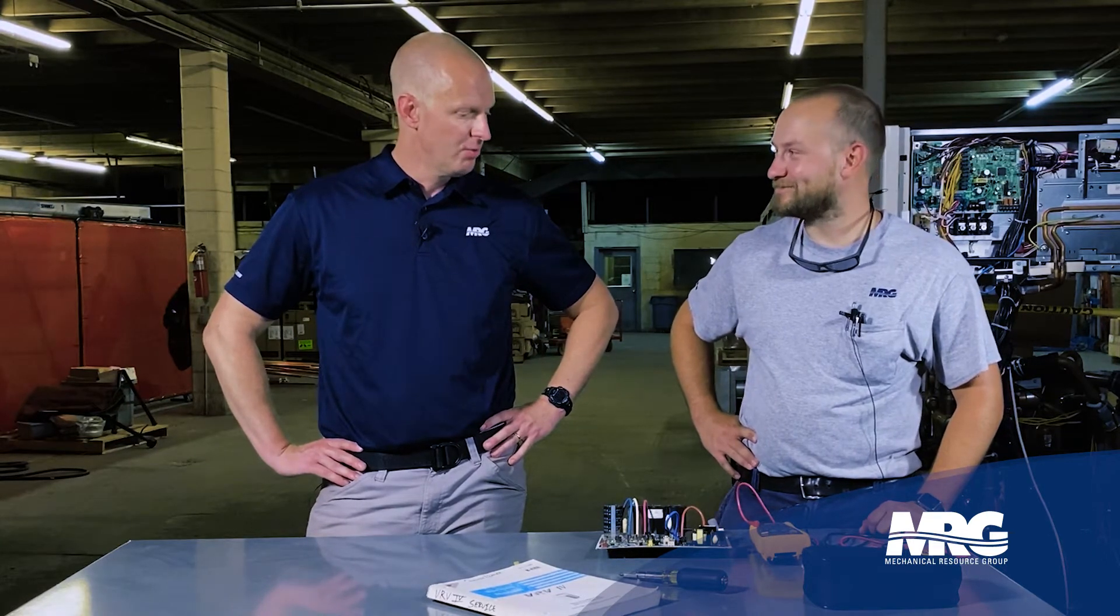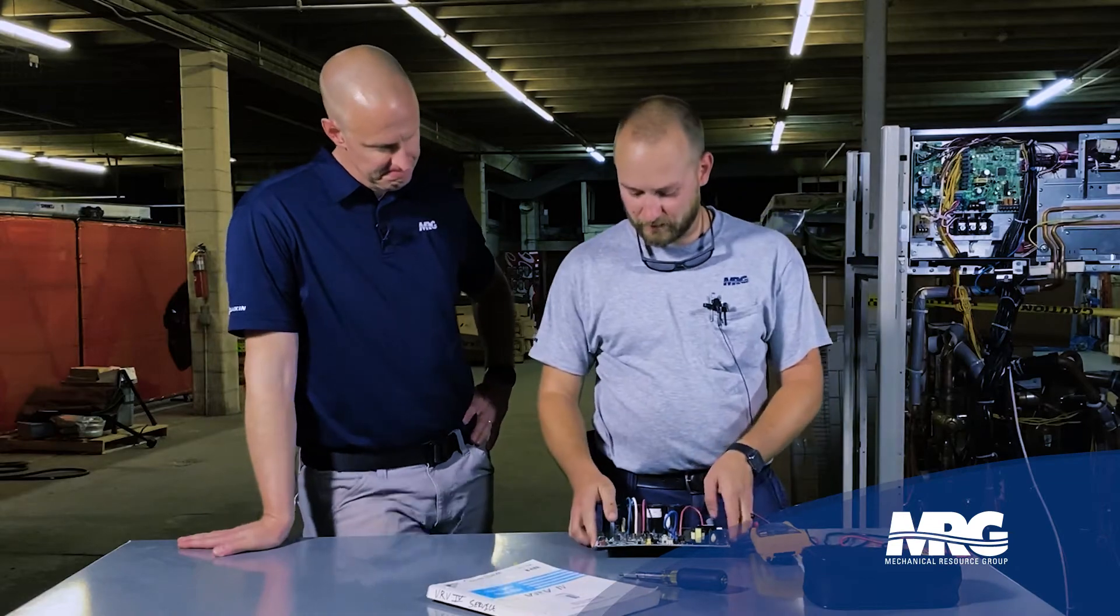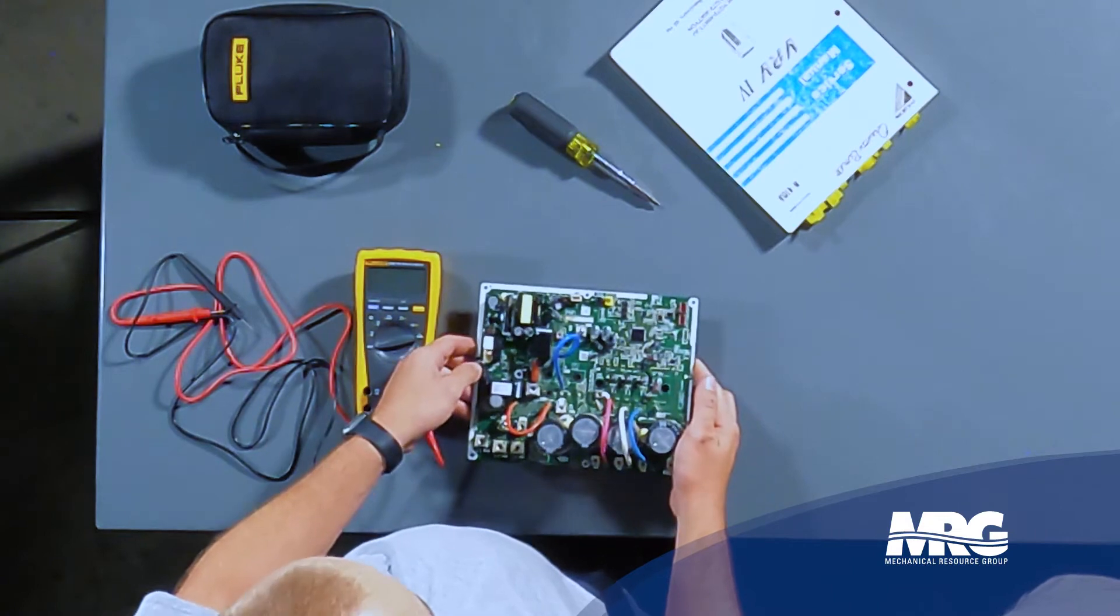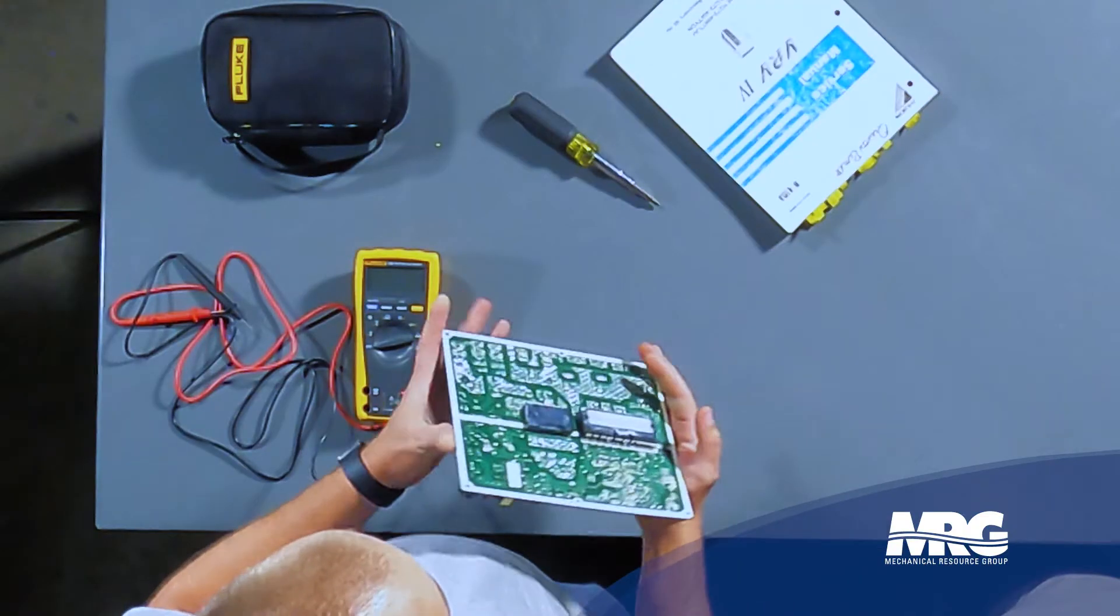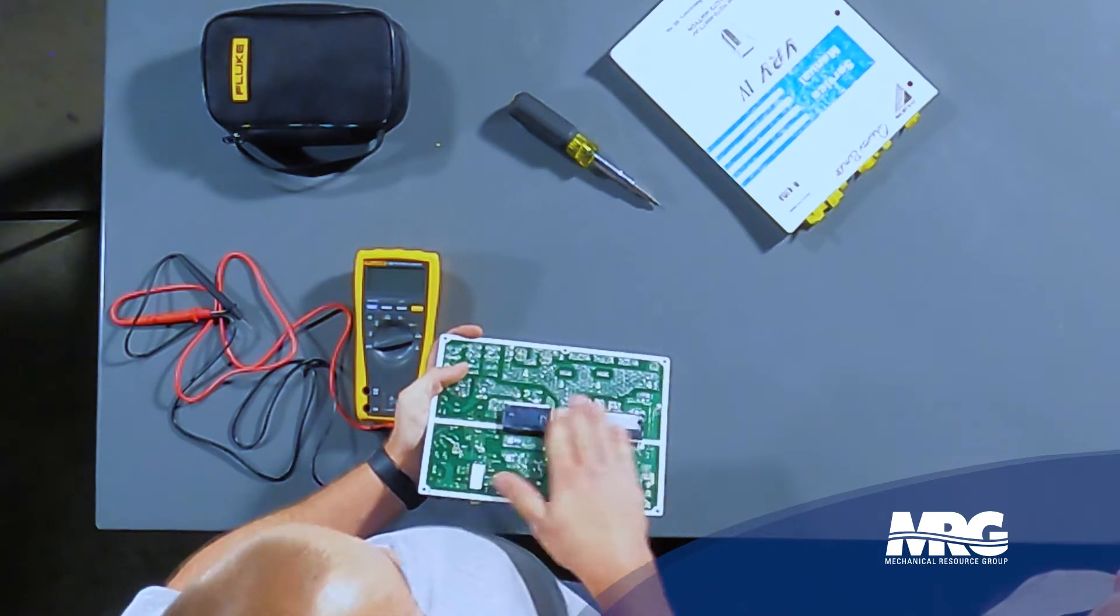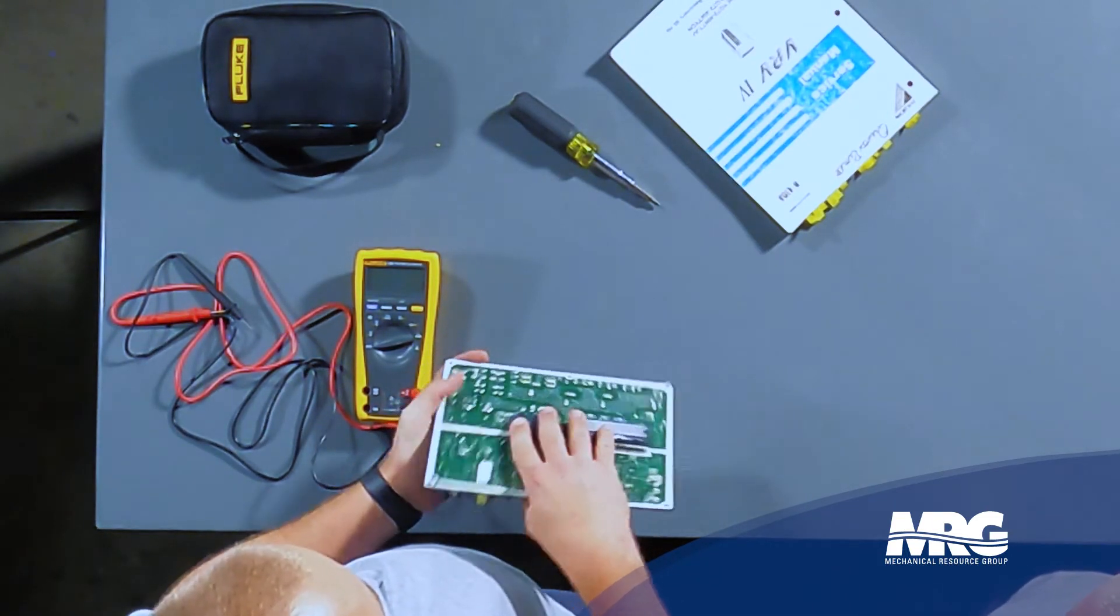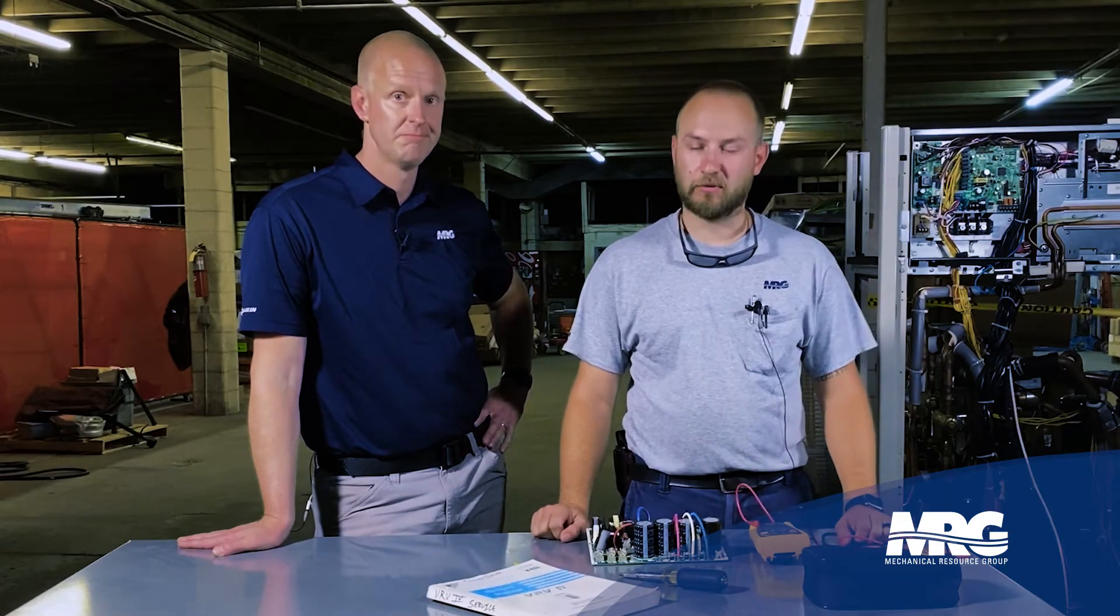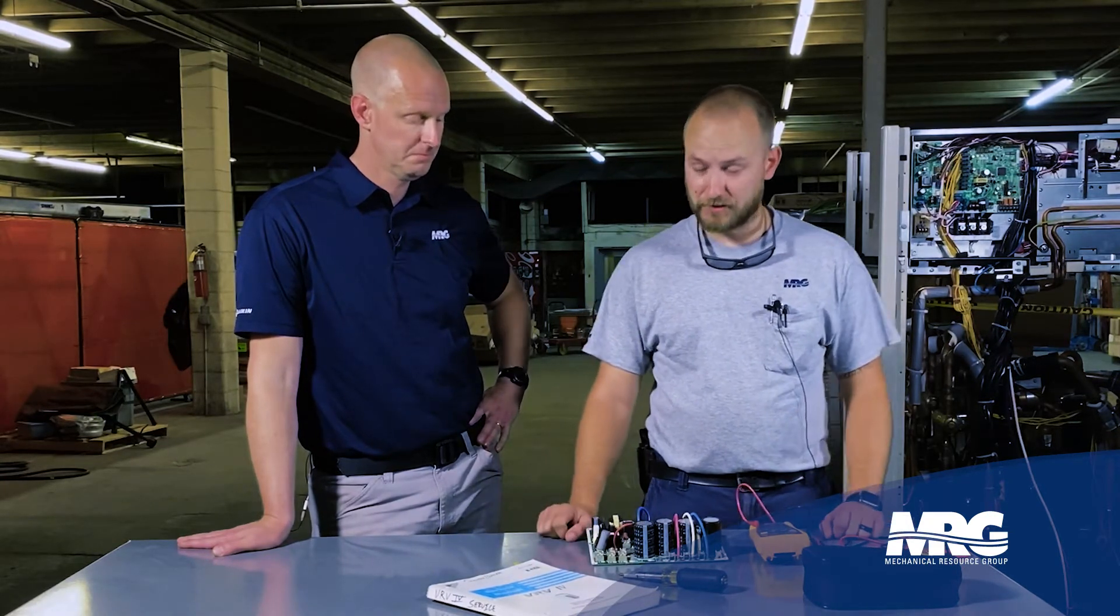Glad to be here. So what we've done here is we've taken an inverter board out of a Daikin VRV4. Naturally, this will normally be inside the VRV module. In one of the earlier videos, we talked about the heat sink on the back of the inverter board, which is cooled by the refrigerant circuit. But basically, we're going to talk about today how to test out the diode bridge on this inverter board. We put it here on the bench for simplicity's sake, but let's get into it.